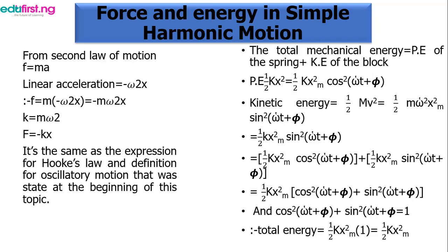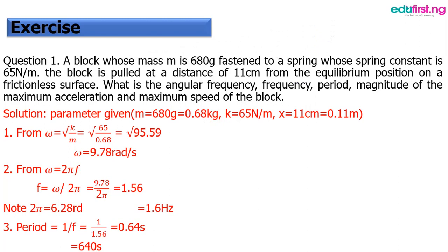Let's start with the first example. A block of mass m — given as 680 grams, or 0.68 kg — has a spring constant k equals 65 N/m and displacement equals 0.11 m. We are asked to calculate the angular frequency. Our omega equals the square root of k over m, which gives 9.78 rad/s. For frequency, from omega equals 2 pi f, making f the subject gives omega divided by 2 pi, which equals 1.556 Hz.